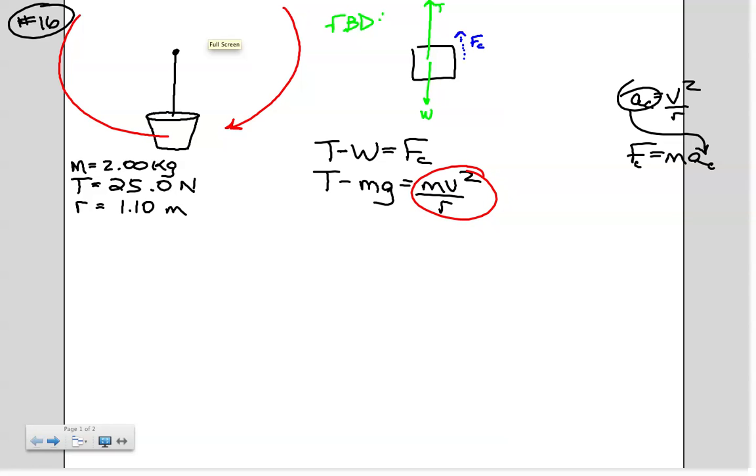At this point, we're solving for the variable v. So we need to isolate that variable. Here's v contained in that term. We need to isolate that. So the first thing that we'll do is multiply both sides by the radius r. We get r times this quantity t minus mg is equal to mv squared. Again, attempting to isolate the variable v, we'll divide both sides by mass, and we get r times t minus mg divided by mass is equal to v squared.